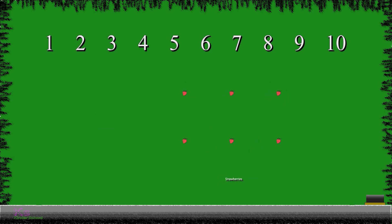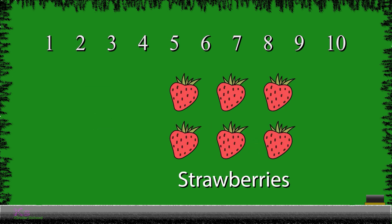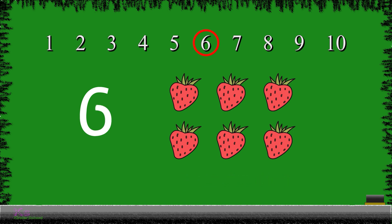Next, we have strawberries. So, let's count now to see how many strawberries we have. 1, 2, 3, 4, 5, and 6. We have 6 strawberries. So, now we will write the number 6. 6.